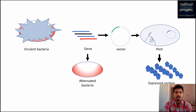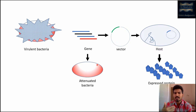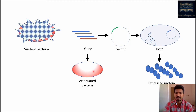The third type is the vector recombinant vaccine. Here, we take a non-virulent bacteria or virus and a gene encoding the surface receptor from a different, virulent organism. We insert this gene into the genome of the non-virulent bacteria. This non-virulent bacteria will then express the surface receptor on its surface, which acts as an antigen and provides acquired immunity when used as a vaccine. Because we combined a foreign gene into this organism's genome, the bacteria acts as a vector — hence the name vector recombinant vaccine.